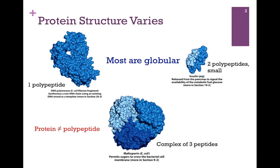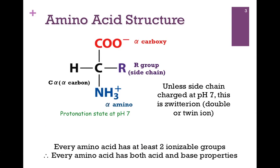Let's first look at the general structure of an amino acid. We have our central or alpha carbon. Attached to that is a hydrogen atom, an alpha carboxy group, an alpha amine group, and the side chain. Because all of these functional groups are in the alpha position with respect to that central carbon, that's why it's referred to as the alpha carbon. The nature of the side chain, or R group, is what distinguishes the 20 common amino acids. Each one has their own unique set of functional groups, giving each one its own unique type of chemistry, either as an amino acid or within a protein.